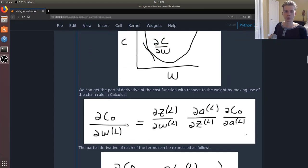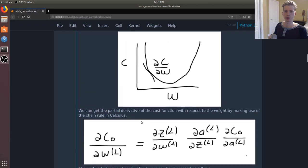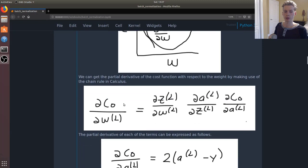In order to figure out the derivative of the cost function with respect to the weights, we use the chain rule in calculus. Z in this case is the output before the activation function with respect to the weight.